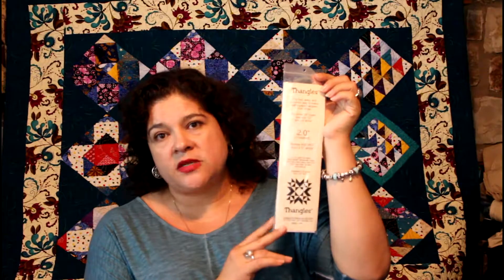Another thing that I'm going to do a teaching on is thangles, which are a paper foundation for how to make half square triangles. The beauty of thangles is that they are already marked. This also comes in a roll and it has the marking grids already so that you can make your half square triangles.